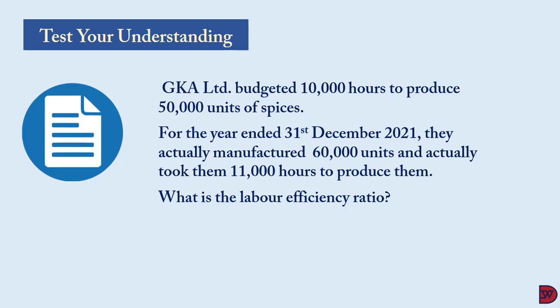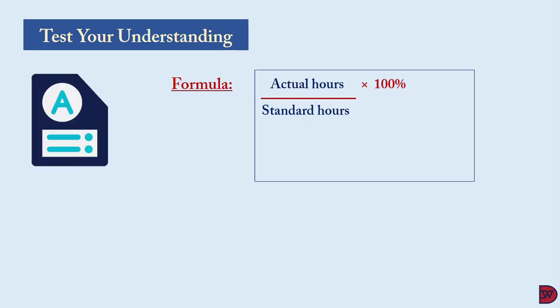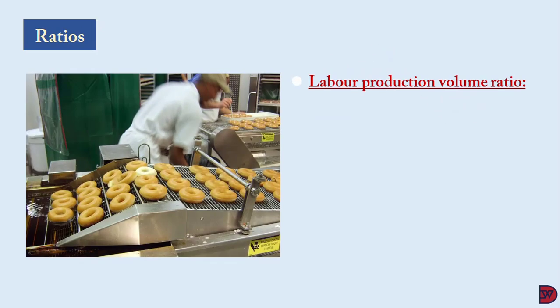Testing understanding: GKE Limited budgeted 10,000 hours to produce 50,000 units for the year ended 31 December 2021. They actually manufactured 60,000 units and it took 11,000 hours. The labor capacity ratio formula is actual hours divided by budgeted hours, multiplied by 100. That is 11,000 divided by 10,000, multiplied by 100, giving 110 percent — meaning the business got 10 percent more hours than expected from labor.